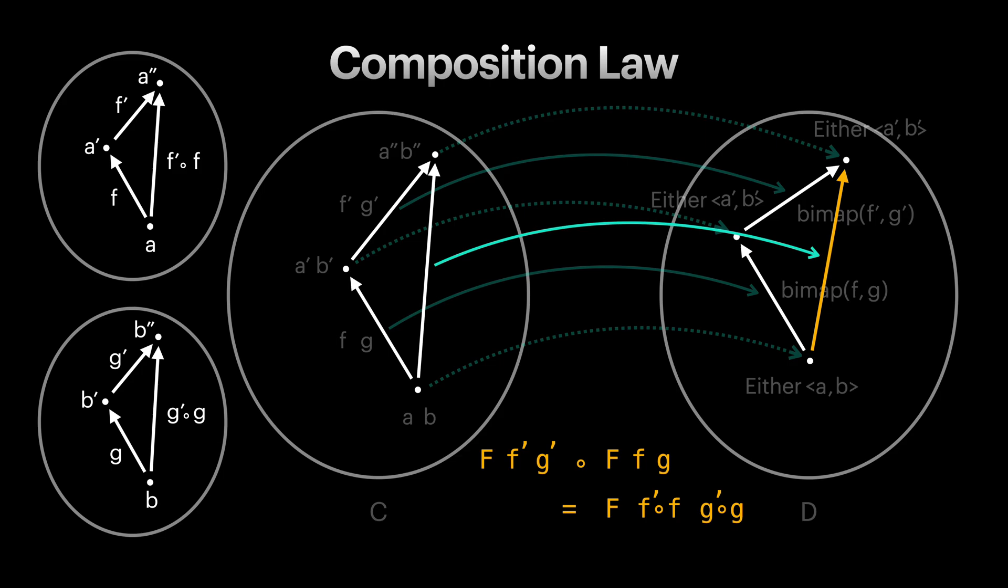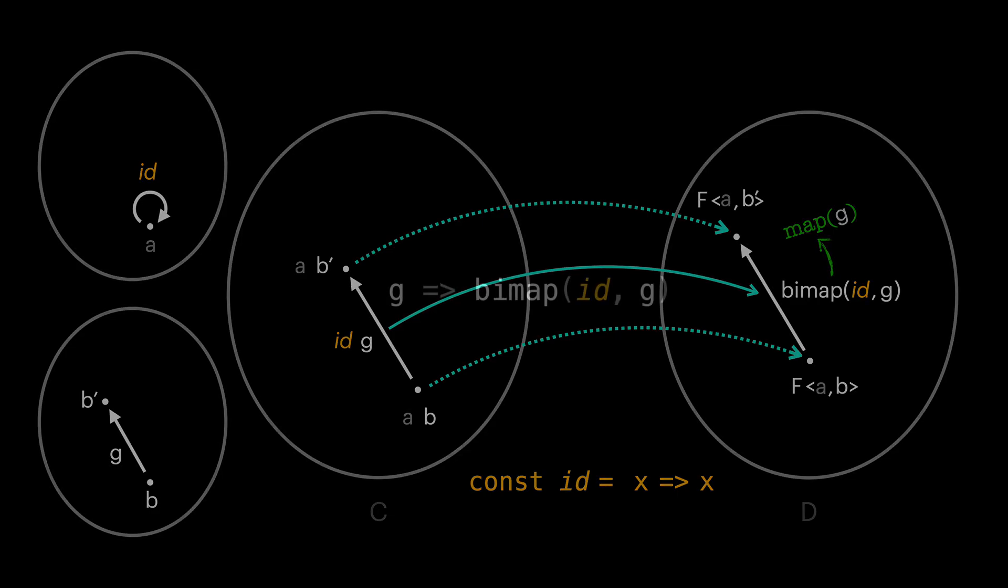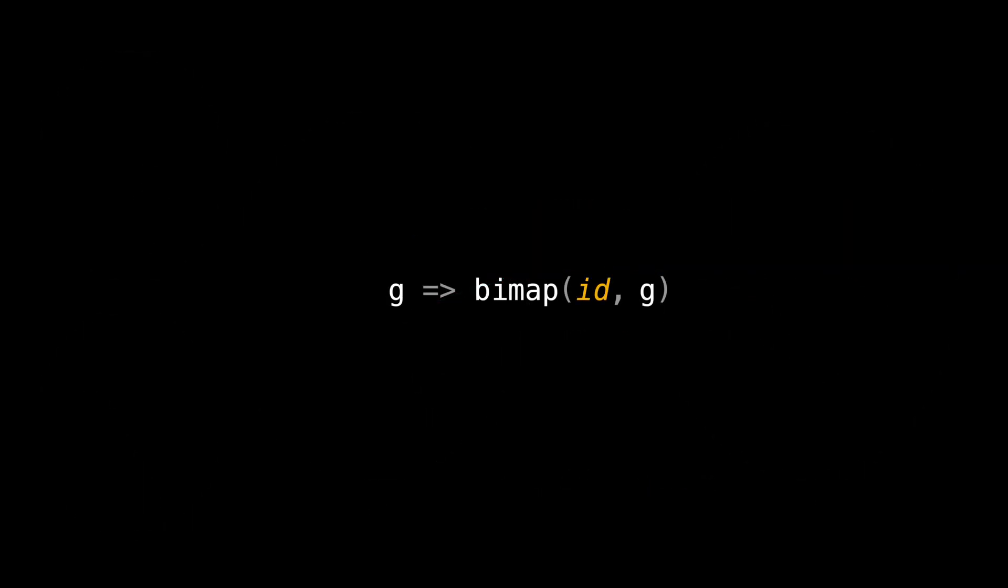This means we can find some interesting stuff about them. For example, what happens if we pass identity as the first function to bimap? This means we don't want to change the first type parameter in either. In other words, this is same as fixing the first type parameter in our structure. This is effectively same as what map function does in either functor. And this is not specific to either, but any bifunctor f. So if we have a lambda function like this, it would be equal to our map function in functor.